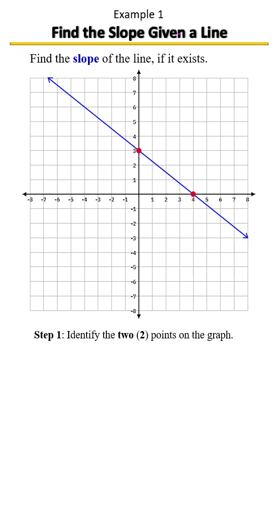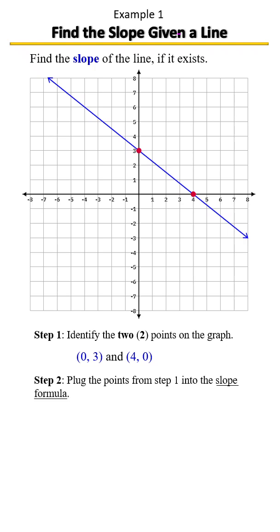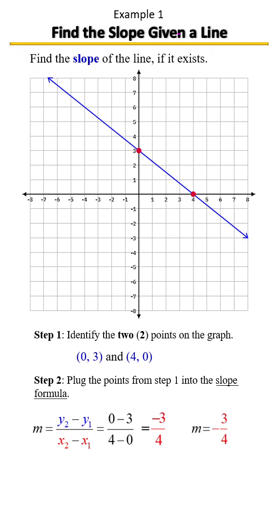Recall the slope formula is y sub 2 minus y sub 1 over x sub 2 minus x sub 1. So once we plug them in, it's going to look like so. That's going to leave us with a negative 3 on top and a 4 on the bottom, which is a slope of negative 3 fourths.